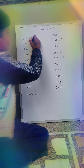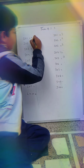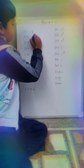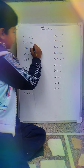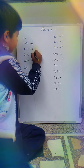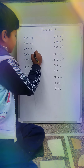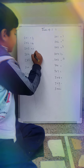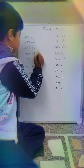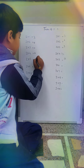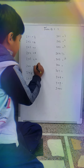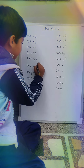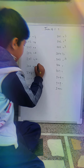Let's start with the 2 times table. 2 times 1 is 2, 2 times 2 is 4, 2 times 3 is 6, 2 times 4 is 8, 2 times 5 is 10, 2 times 6 is 12.